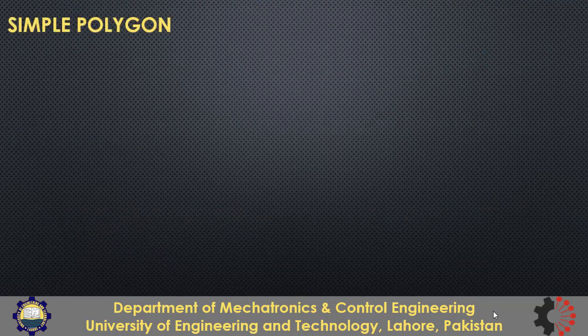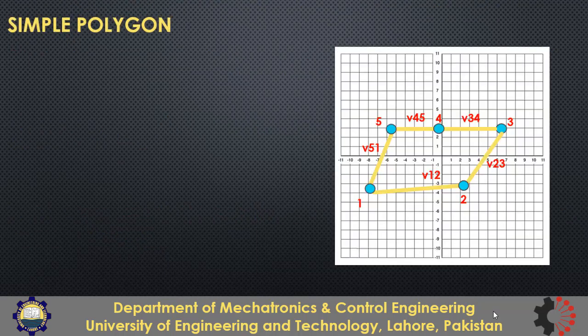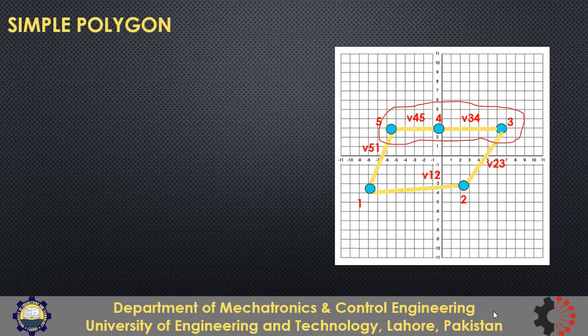Consider yet another case of a convex polygon where two adjacent lines are exactly inline. The cross product of two parallel vectors is 0. So in this case, v34 cross v45 will not be positive but 0. We further update the rule: if all cross products are positive or zero, or all are negative or zero, the polygon is a convex polygon.